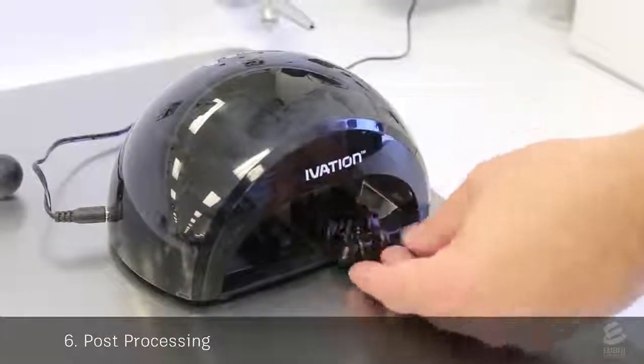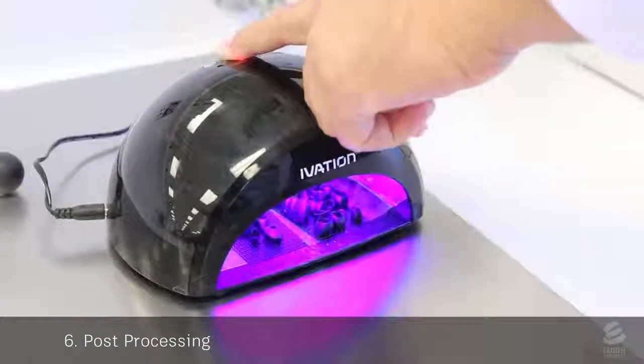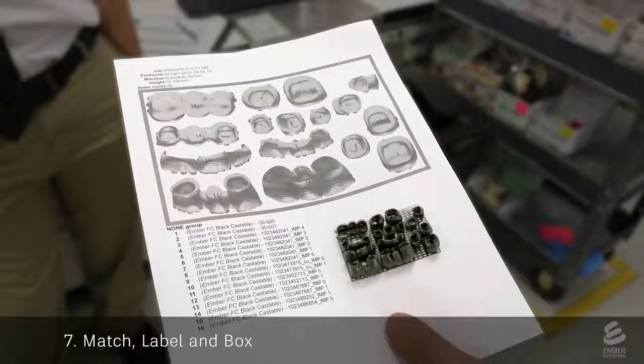Then the print goes through a post-curing step under a UV lamp. Because the print can have multiple crowns from multiple patients, they create a sheet for each print. The sheet has an image that matches each crown and coping on the print with a specific patient.